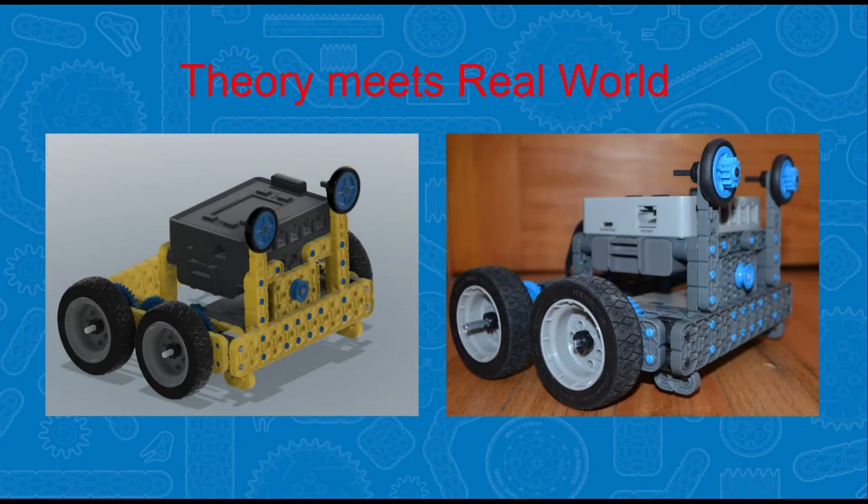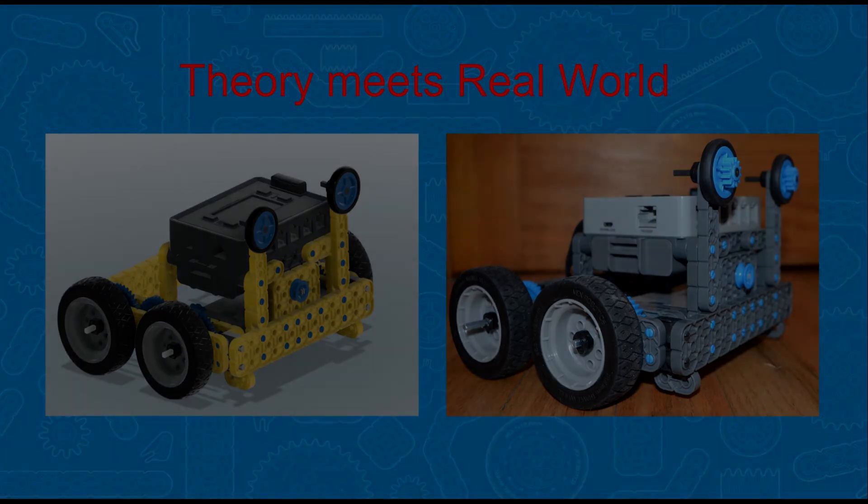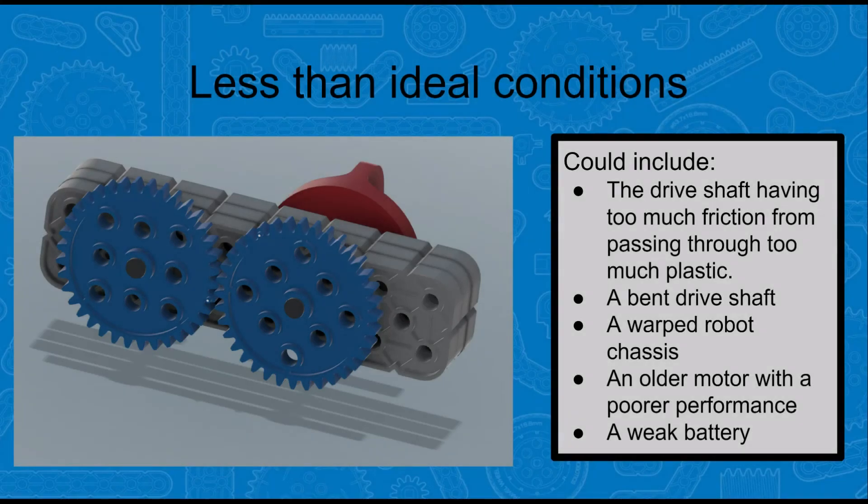In ideal conditions, what does that mean? Well, in the real world, gear systems have a number of factors which have to be considered. For some examples of less than ideal conditions, these could include things like the drive shaft having too much friction from passing through too much plastic, a bent drive shaft, a warped robot chassis, an older motor with poor performance, or a weak battery.